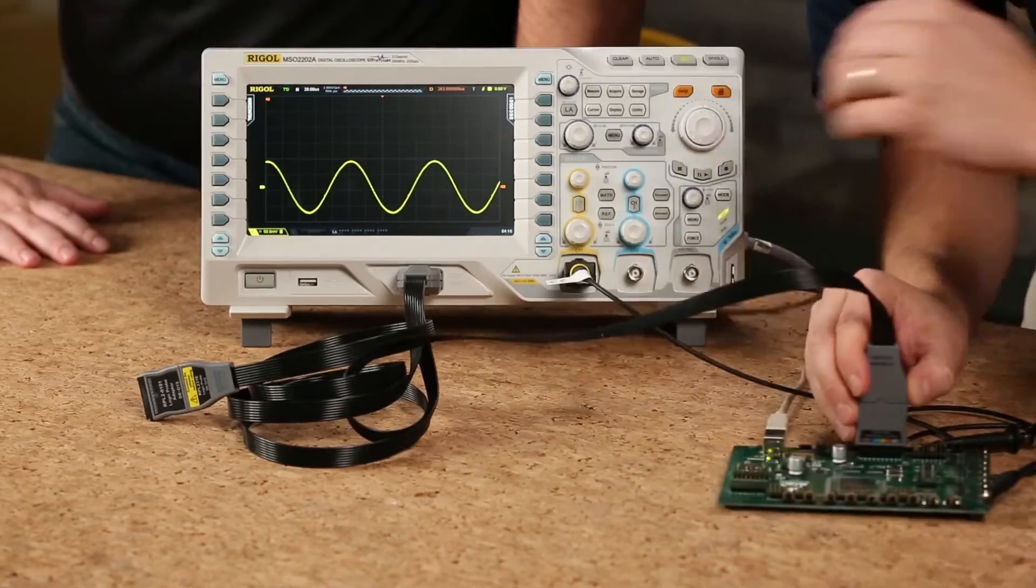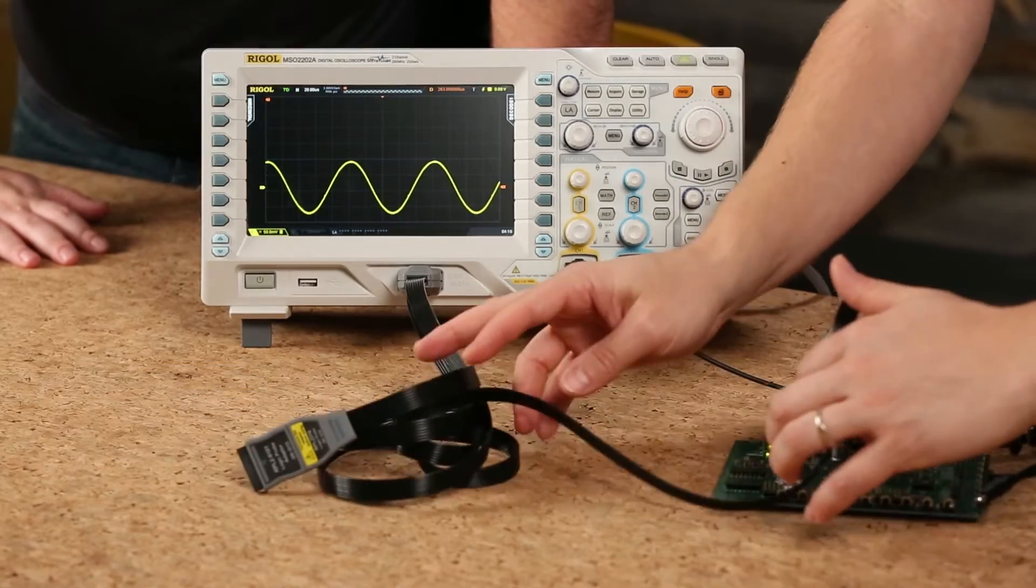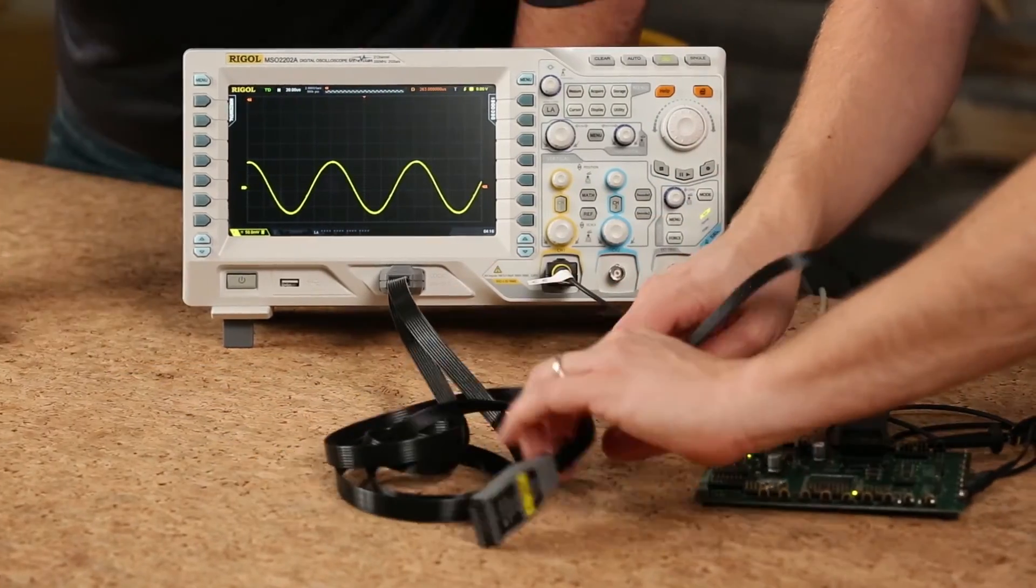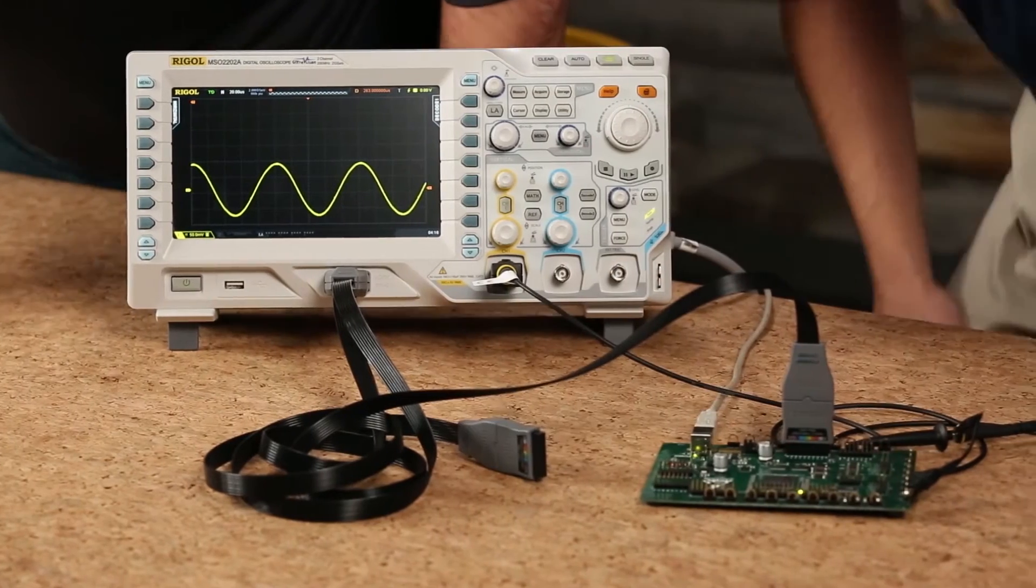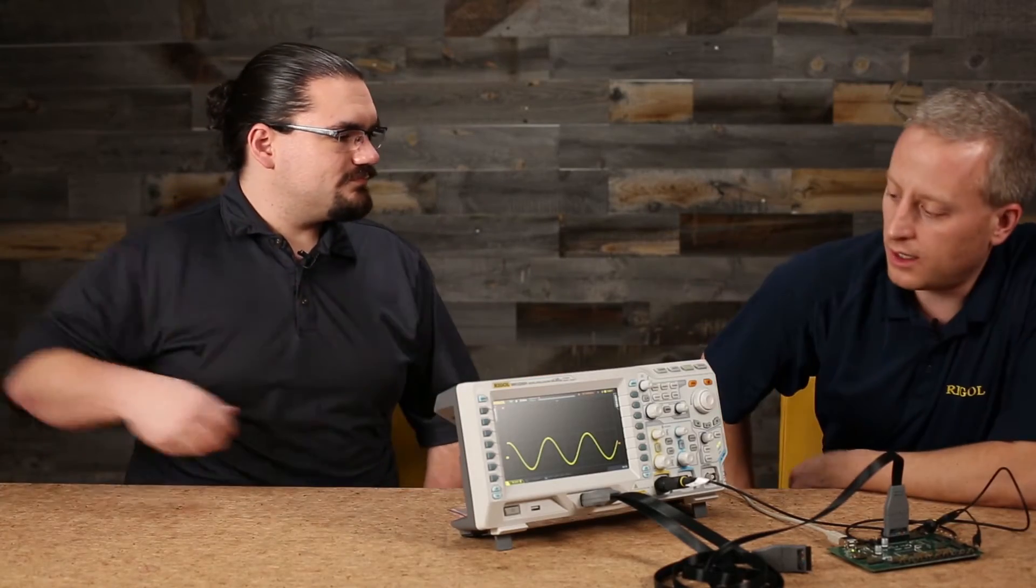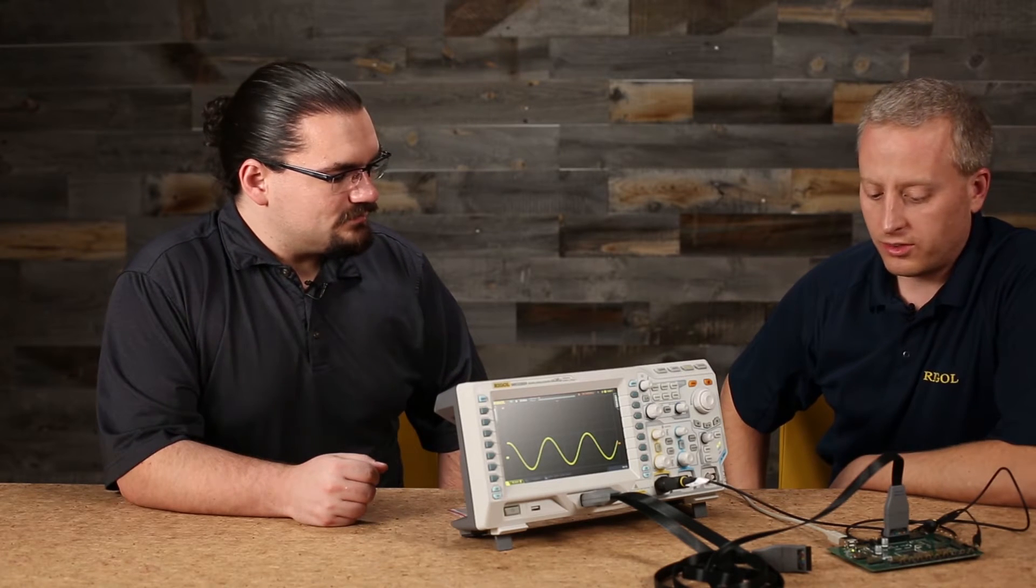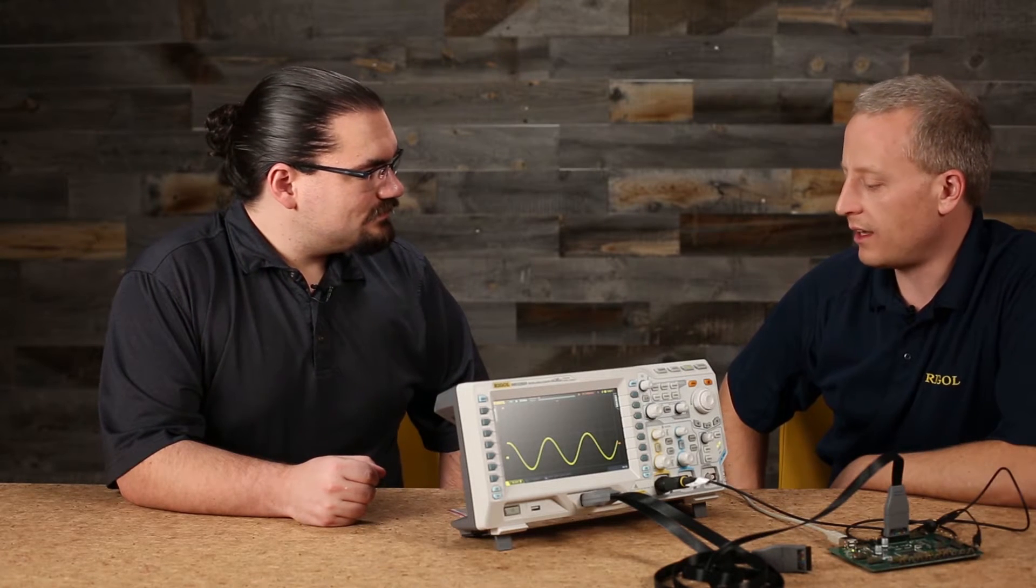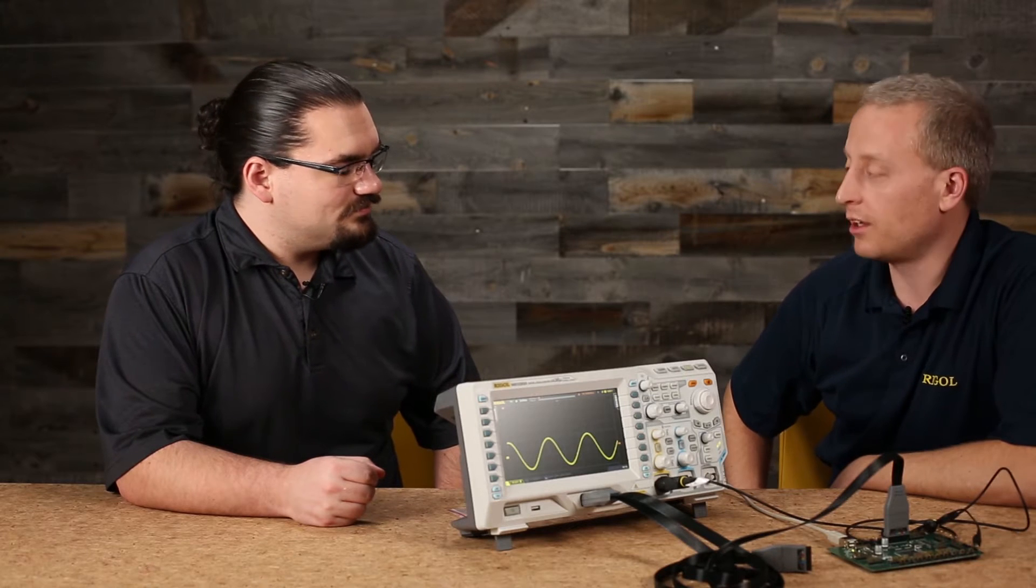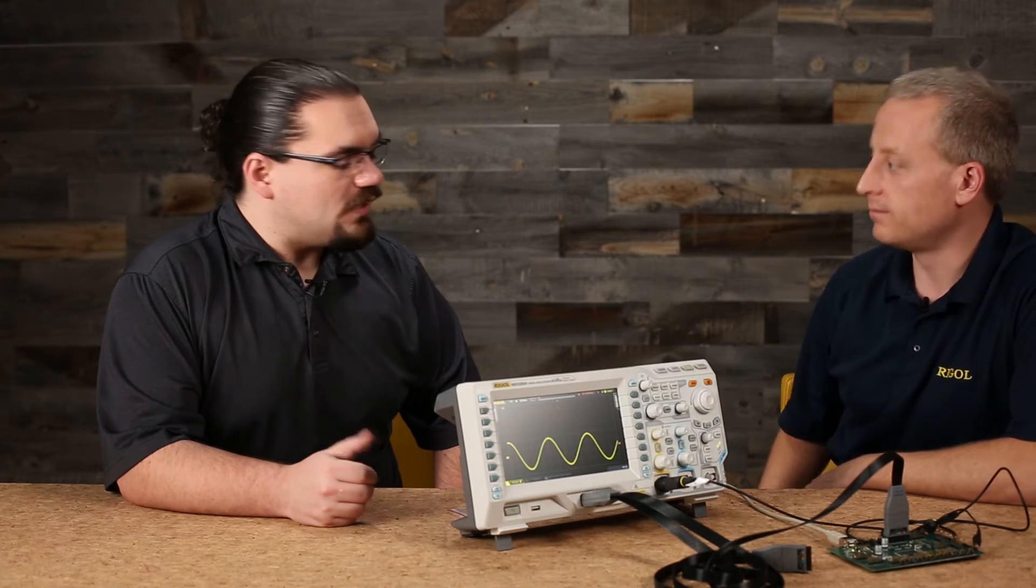And what are we going to be looking at here on this test board? So right now what we've got up on the screen already is the output of an 8-bit DAC, and that DAC is obviously we're kind of creating a sine wave with it. And now what we want to do is look at how that's being created. So we're going to look at the parallel bus that's kind of driving that.